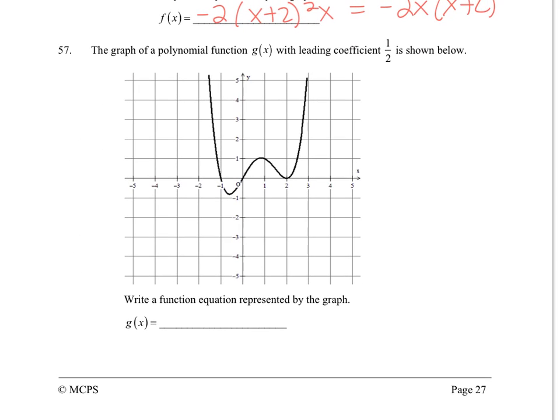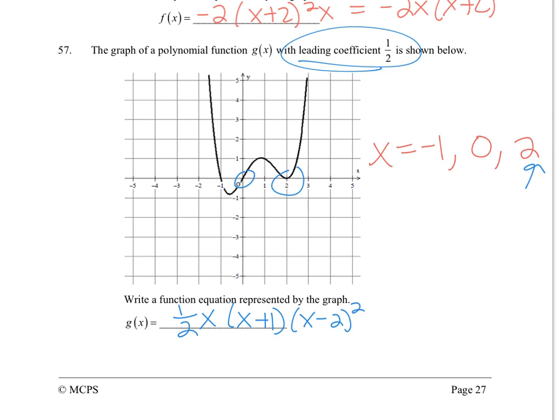Similarly for 57, my zeros are -1, 0, and 2. But I noticed 2 has a multiplicity of 2. Then we got 1/2 as a leading coefficient. We have the zero at 0, the one at -1, and the one at 2 twice.